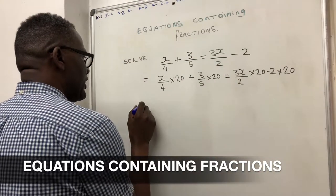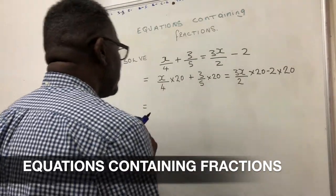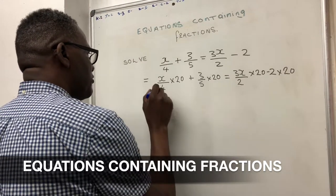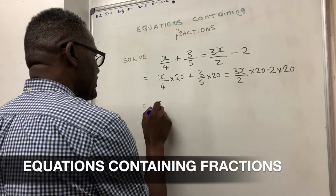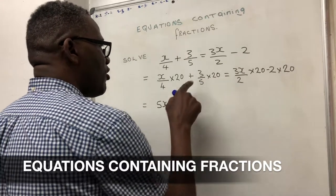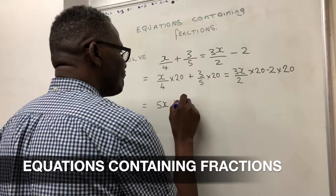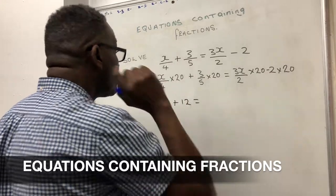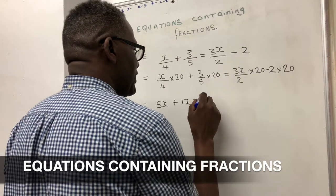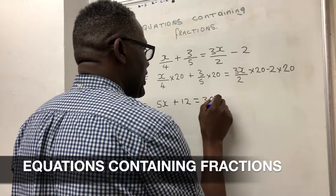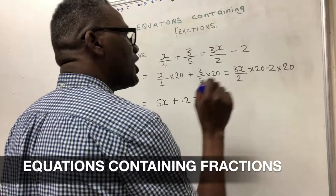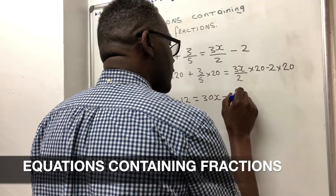So on the next line we transpose this out. 4 into 20 goes 5, that gives me 5x, plus 5 into 20 goes 4, 4 times 3 is 12. Equals 2 into 20 goes 10, 10 times 3x is 30x, minus 2 times 20 is -40.